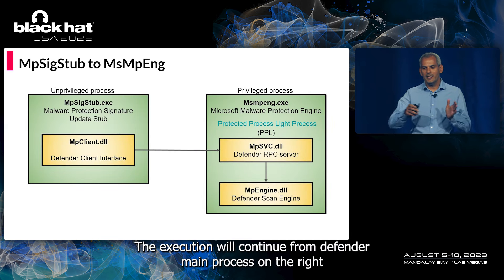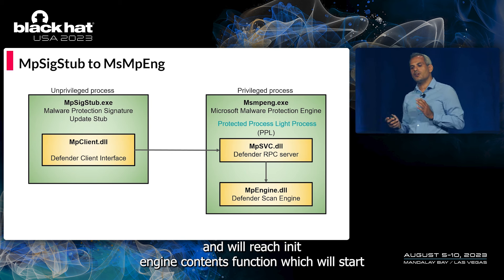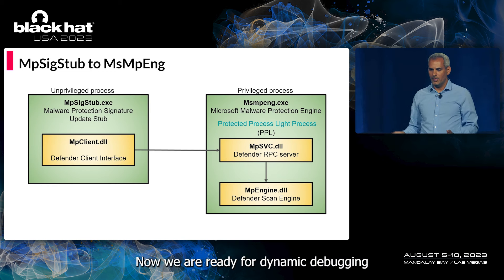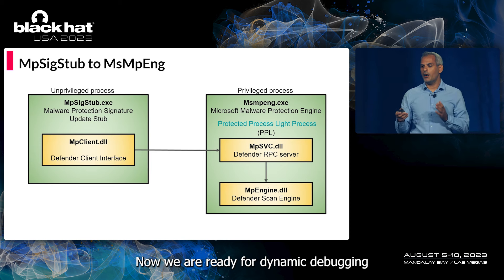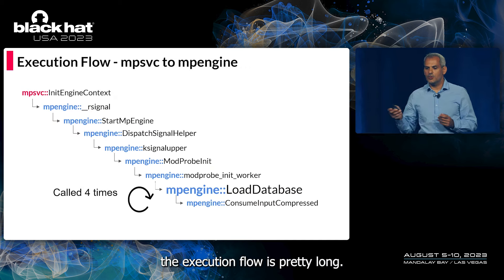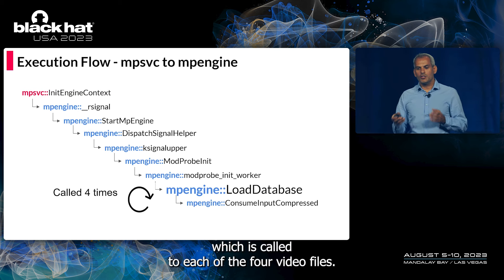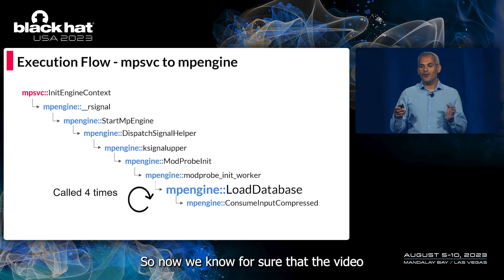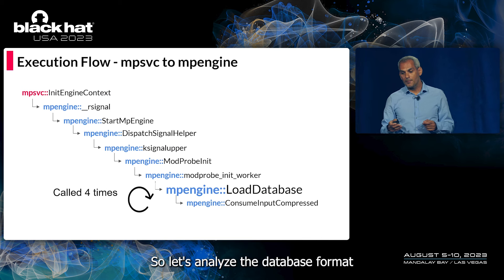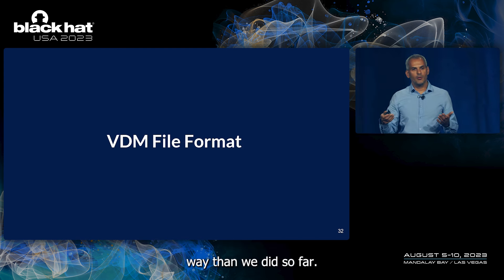After the RPC call is complete, execution continues from Defender's main process and reaches InitEngineContents, which starts the update process by calling the RSignal function in MP Engine DLL. We then performed dynamic kernel debugging to understand the rest of the execution flow. The flow is quite long, but the interesting part is in the loadDatabase function, which is called for each of the four VDM files — confirming that VDM files indeed contain the update database.